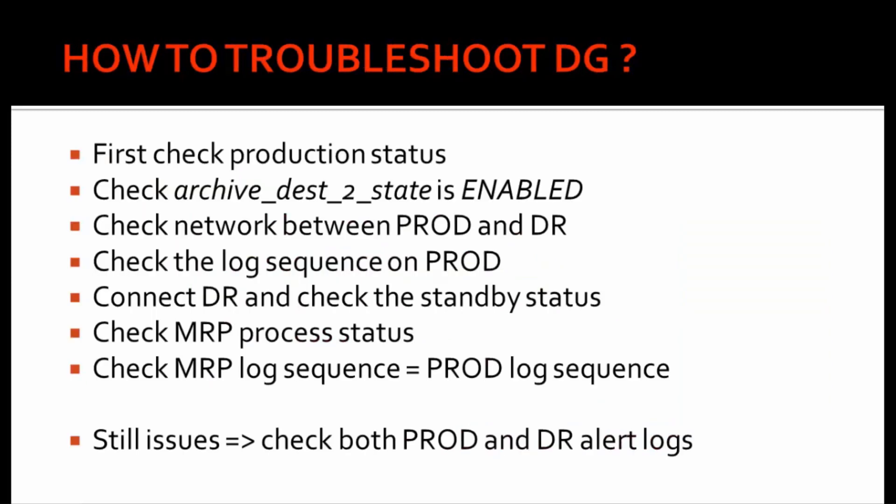So how do we troubleshoot the Data Guard? First of all, we have to check the status of the production database — check whether your production is up and running or not. Because if somebody stops the production server, it won't be able to send the archives from production to the DR. If your production is stopped, your DR MRP won't start because nothing is coming from production to apply. So the first thing you must always check is the production server status.